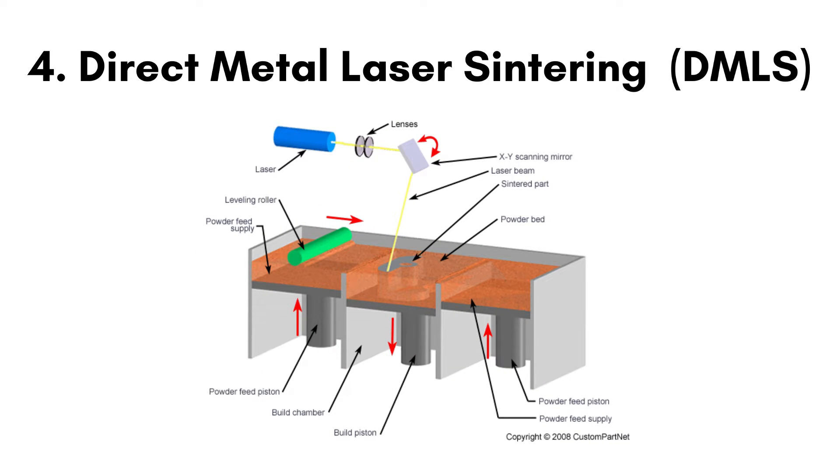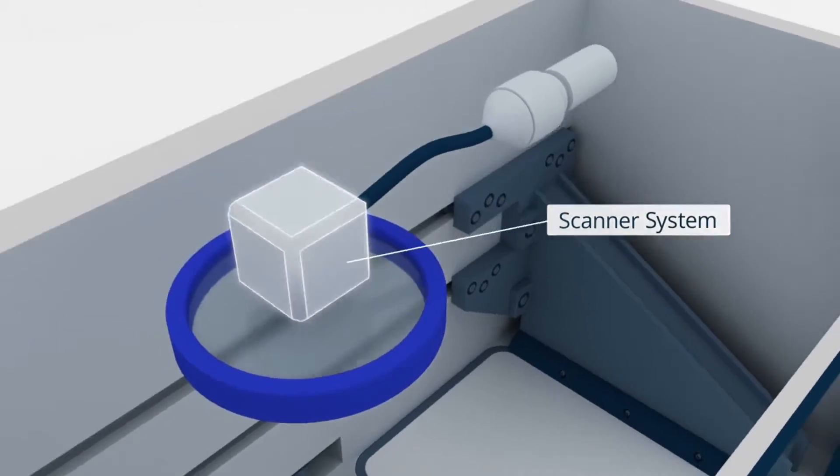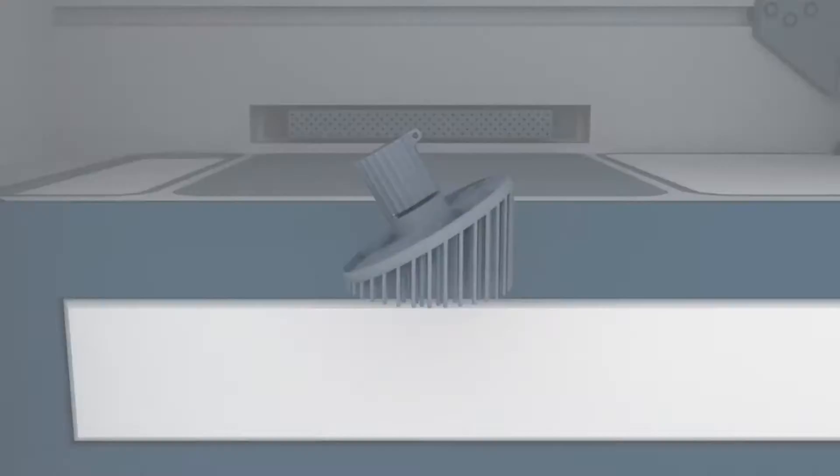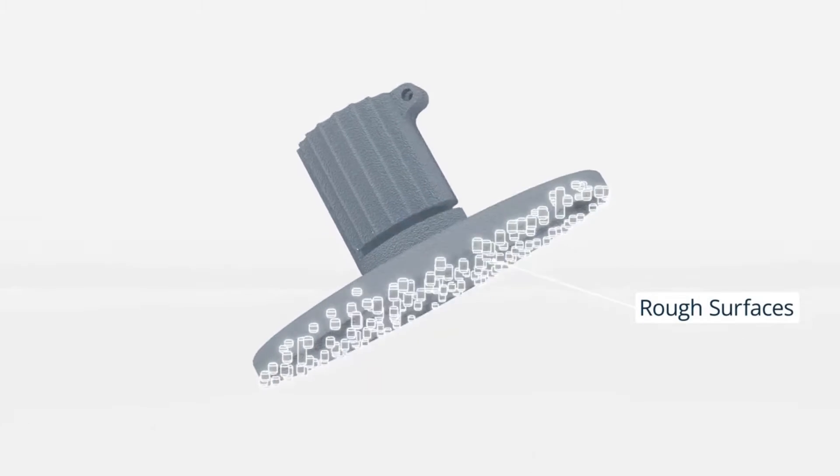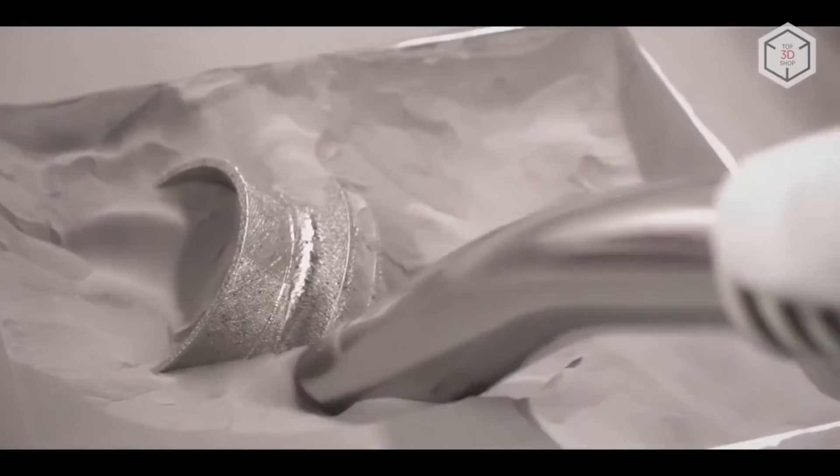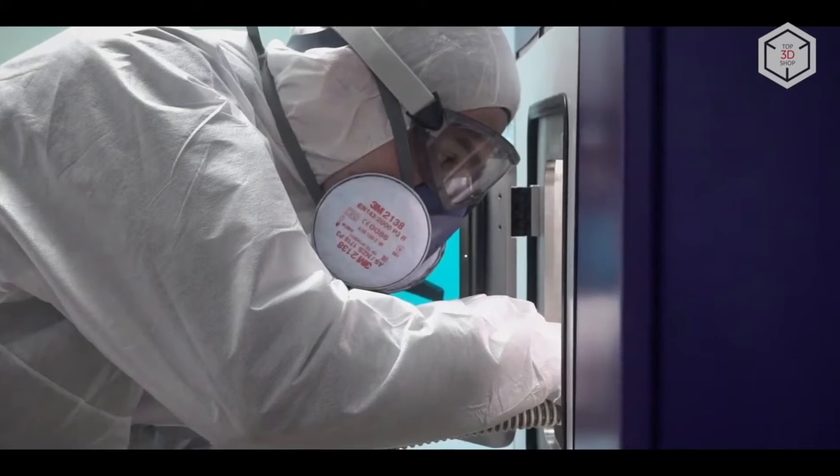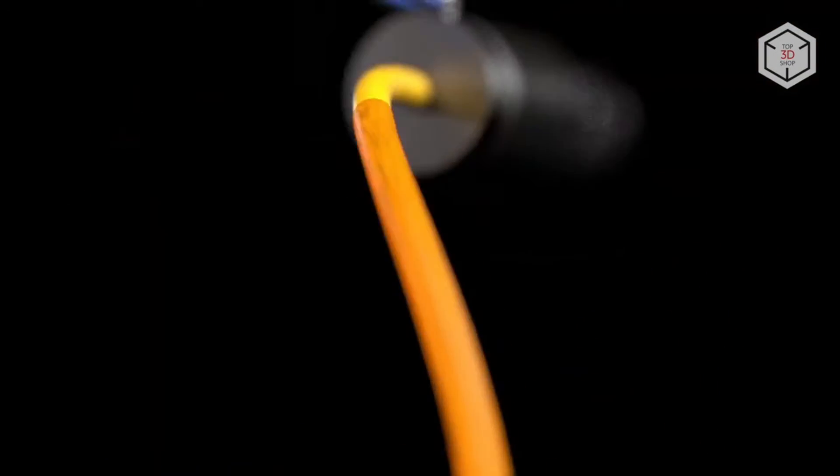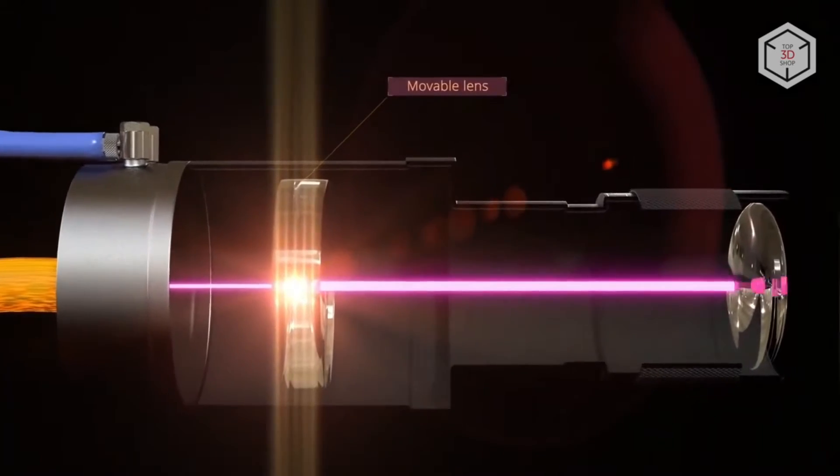Number 4. Direct Metal Laser Centering or DLLs. DLLs is a process used primarily for metal parts production. It operates similarly to selective laser centering SLS but with metal powders instead of plastics or polymers. The process begins with a thin layer of metal powder spread evenly across the build platform. A high-powered laser selectively fuses the powder particles together based on a 3D digital model, creating a solid layer. The build platform then lowers and a new layer of metal powder is spread over the previous one. This process repeats layer by layer until the entire part is formed.